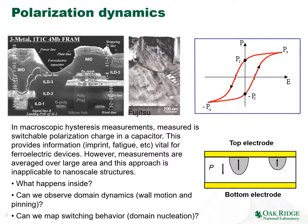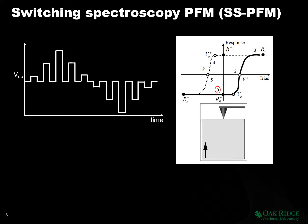Key local questions include: does nucleation start here or there inside the ferroelectric capacitor? Can we observe domain dynamics such as how domain walls move and pin at defects? And can we map the switching behavior — how much energy does it take to nucleate a domain at one location versus another? These questions cannot be answered by macroscopic measurements. Instead, we use a PFM microscope to explore local switching behavior at each location — this is the technique called switching spectroscopy PFM.